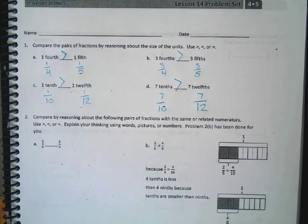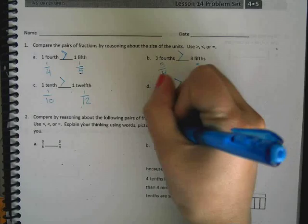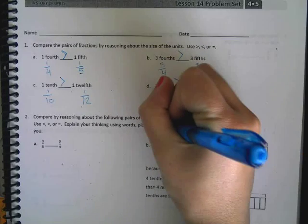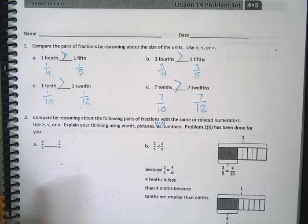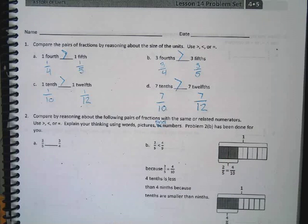Number two. Compare by reasoning about the following pairs of fractions with the same or related numerators. Use greater than, less than, or equal to. Explain your thinking using words, pictures, or numbers. Problem 2B has been done for you. Let's go ahead and let's cross off 'or' and make that an 'and.' Because I think we are going to do both. Numbers easily, picture easily, words easily. We can do it.